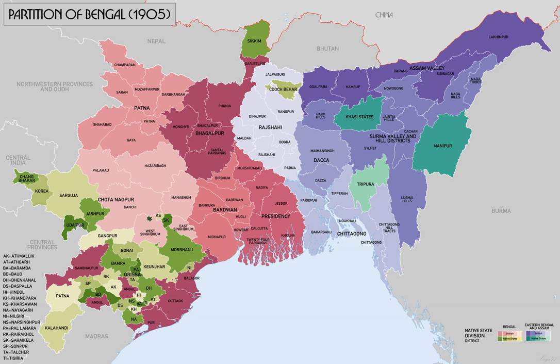The reason behind the partition that was officially announced was that the Bengal province was too large to be administered by a single governor and so it would be partitioned for administrative purposes. The real reason behind the partition was political and not administrative. East Bengal was dominated by the Muslims and West Bengal by the Hindus — partition was yet another part of the divide and rule policy. The following excerpts from Curzon's letter of 2 February 1905 to St John Broderick, Secretary of State for India, give an idea of his aims in partitioning Bengal.